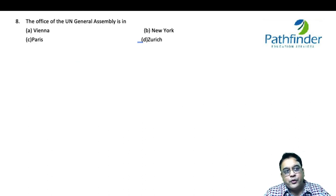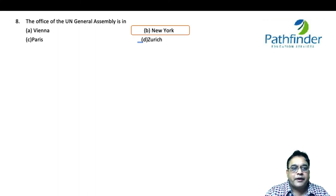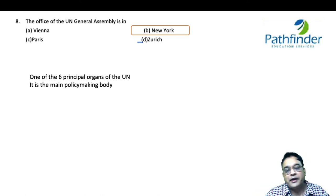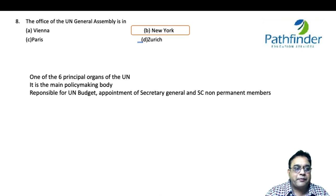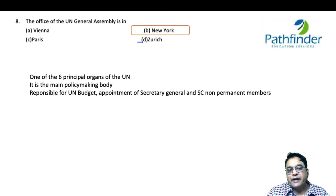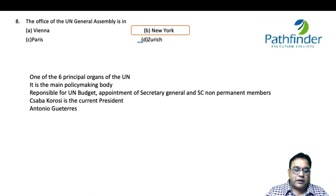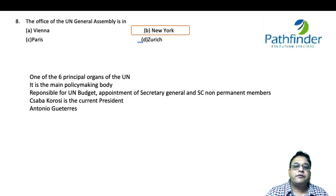The office of the UN General Assembly is in which city? The options are Vienna, New York, Paris, and Zurich. The correct answer is New York. The UN General Assembly is one of the six principal organs of the United Nations and the main policy-making body, responsible for the UN budget, appointment of the Secretary General, and non-permanent members of the Security Council. Sabah Korosi is the current President of the UN General Assembly, and Antonio Guterres is the Secretary General of the United Nations.